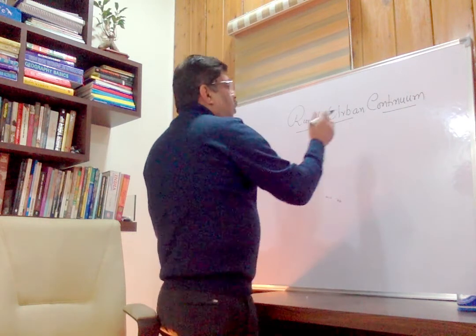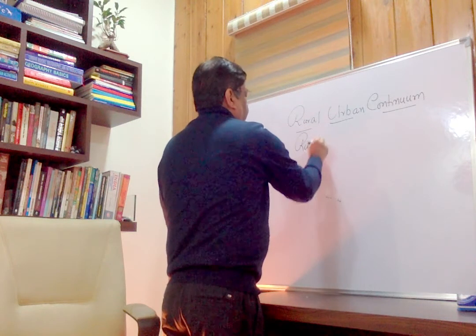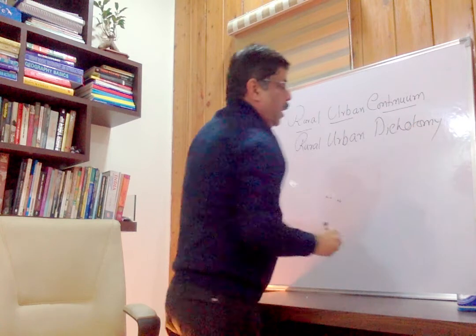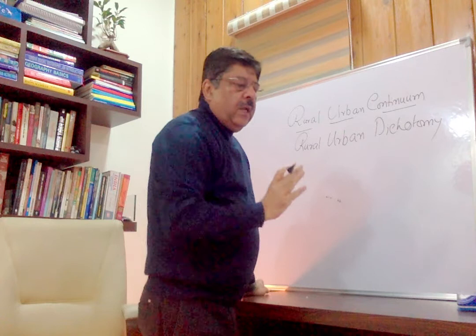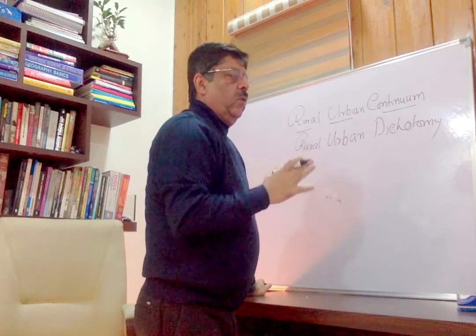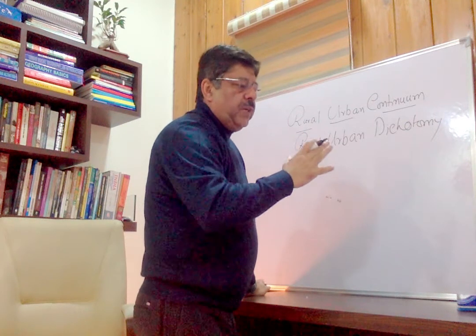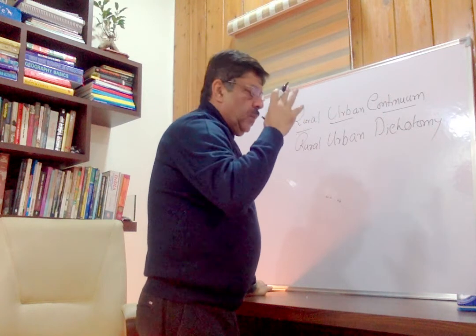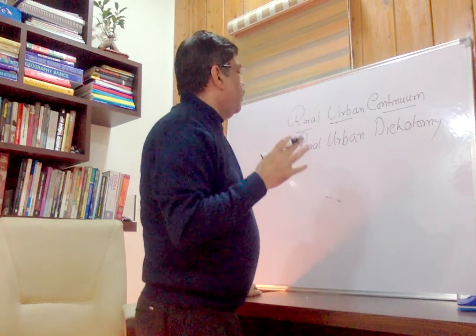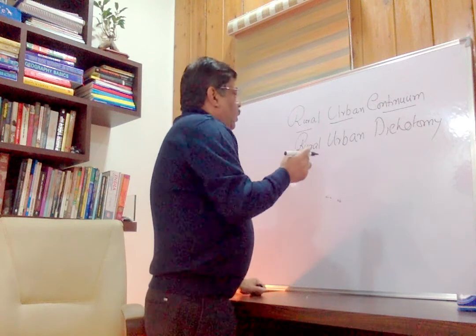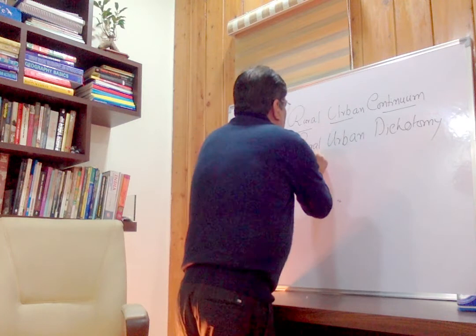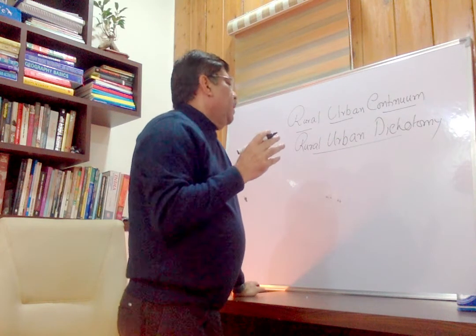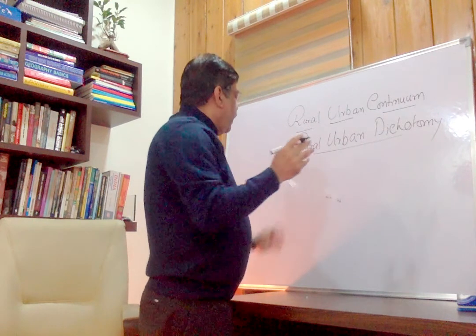So we have two terms: Rural Urban Continuum and Rural Urban Dichotomy. What is Rural Urban Dichotomy? There are two types of settlements: urban settlements and rural settlements. Urban has diversification of the economy and less dependence on primary activities. Rural settlement has almost complete dependence on primary activities, mainly agriculture. According to some social scientists, there is no Rural Urban Dichotomy — they are situated in a continuum.